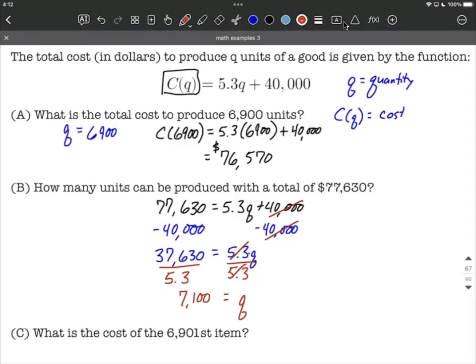When we think about what kind of label this should have, it's not in dollars because Q is our quantity, it's going to be the number of units. So 7,100 units can be produced for $77,630.